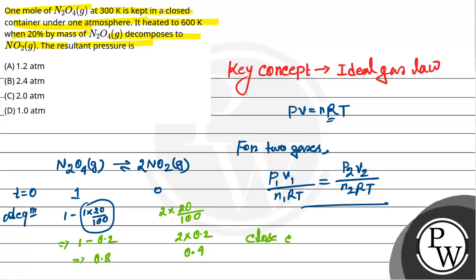Now the experiment is done in a closed container. Closed container means volume is fixed, volume is not increased. Volume is constant, volume is fixed. This means V can be constant.